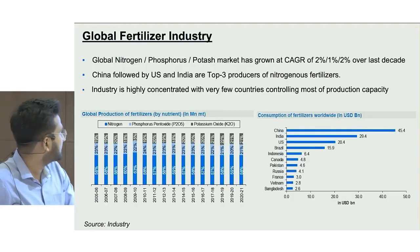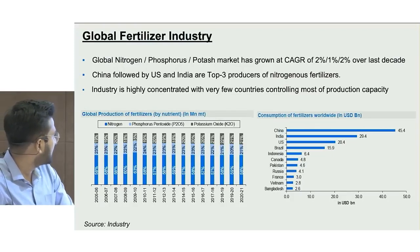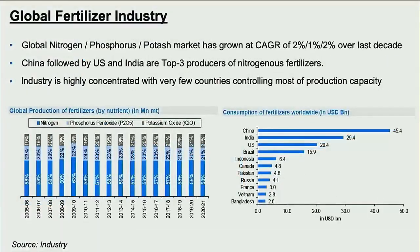In the global fertilizer industry, close to 60% of nutrients are nitrogen-based fertilizers, with phosphorus and potassium close to 20% each. Over the last 10 years, nitrogen, phosphorus and potassium have grown at 2%, 1% and 2% respectively. In terms of country-wise consumption, China leads followed by India and the US, making the industry very concentrated among a few countries.